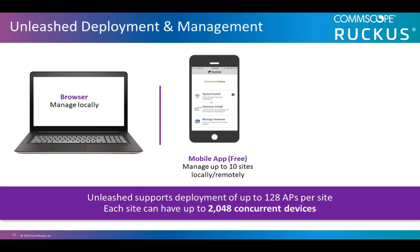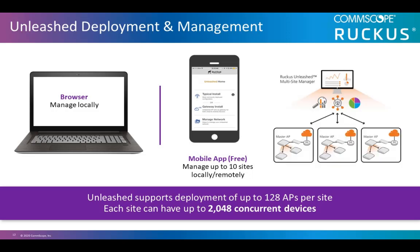Here are two key numbers to keep in mind. With the update in March of 2019, Unleashed supported the deployment of up to 50 APs per site and each site could have up to 1,024 users. As of this release, Unleashed can now support the deployment of up to 128 APs per site and each site can have up to 2,048 concurrent devices.